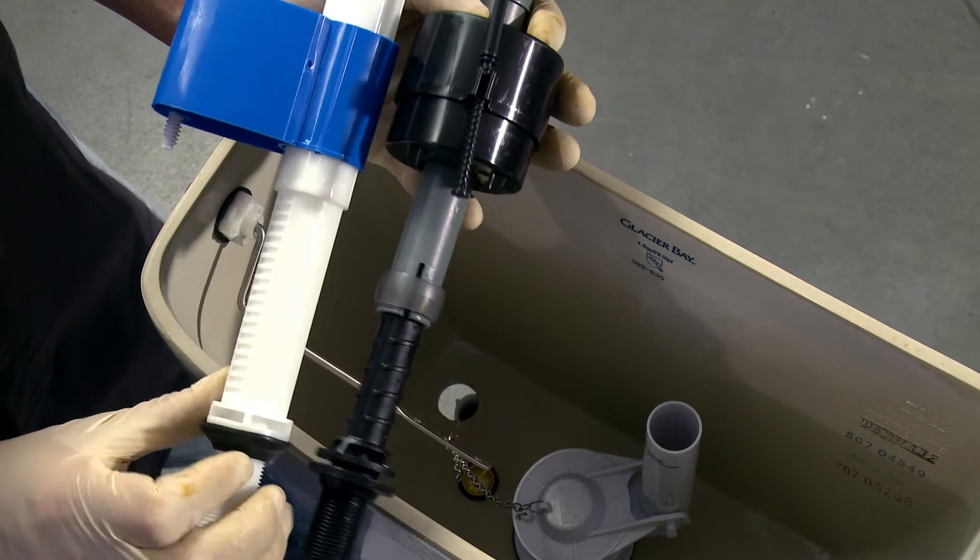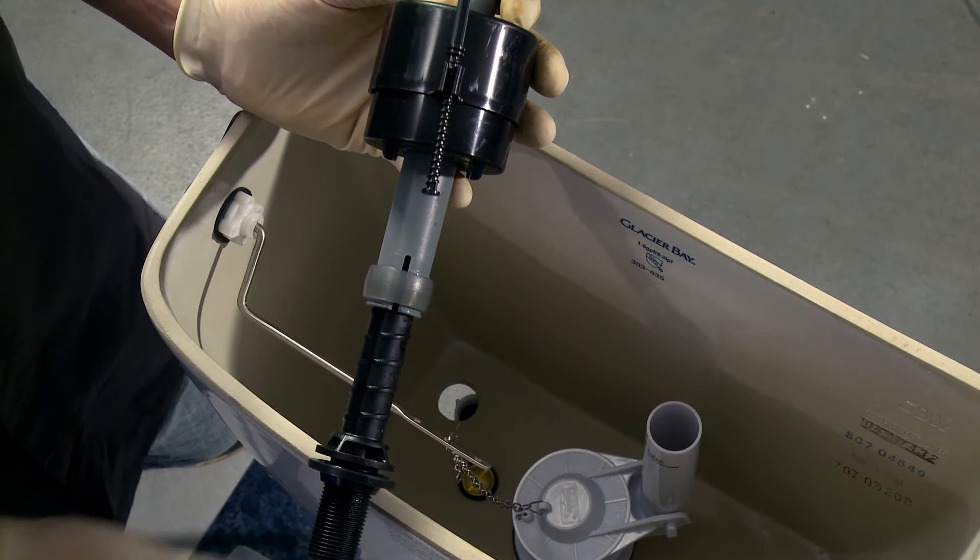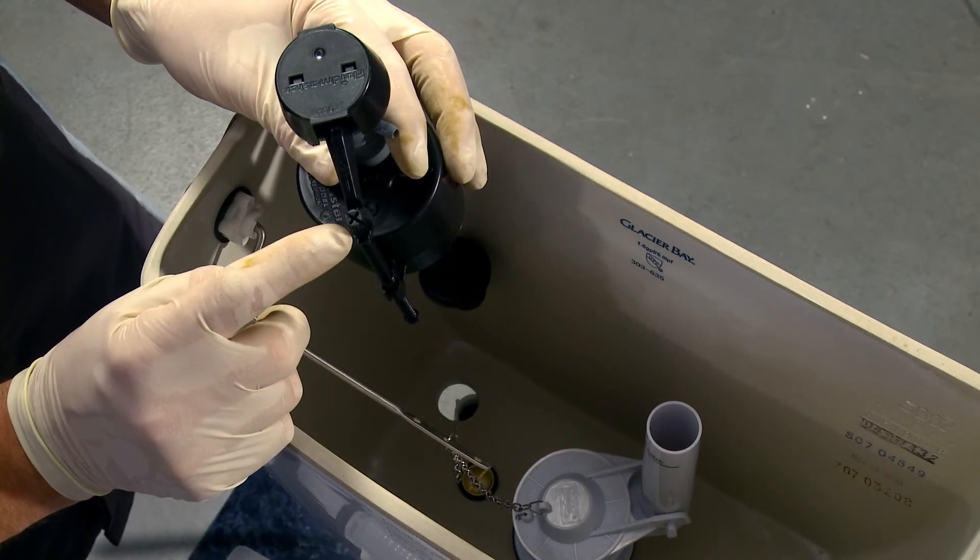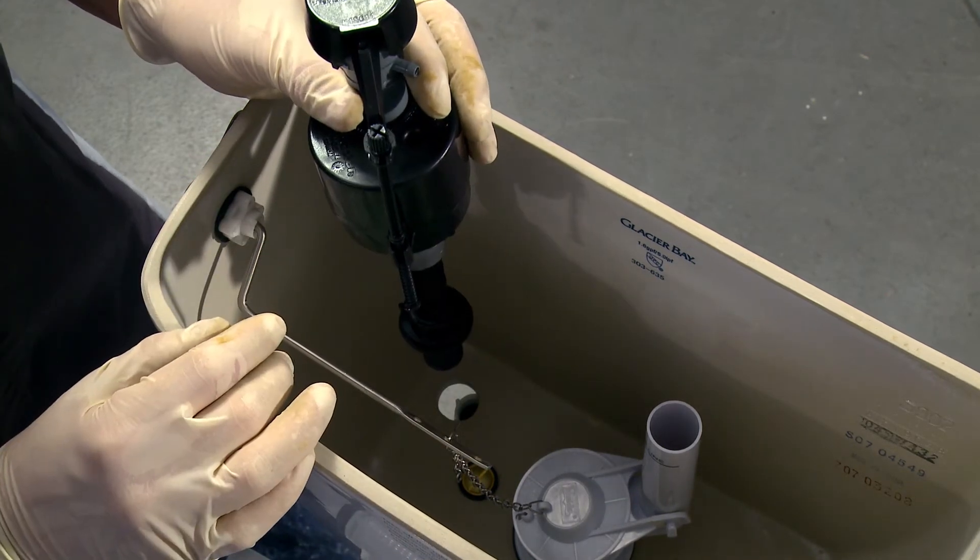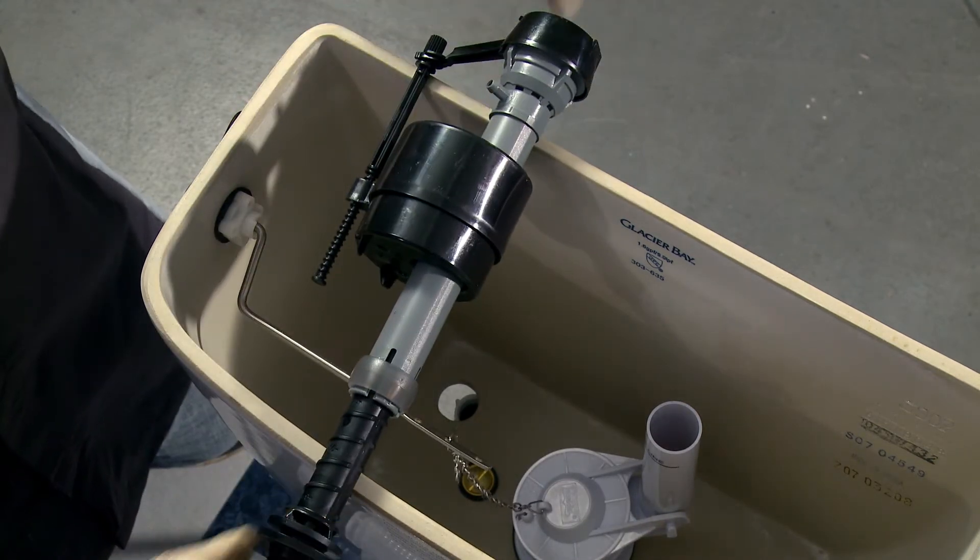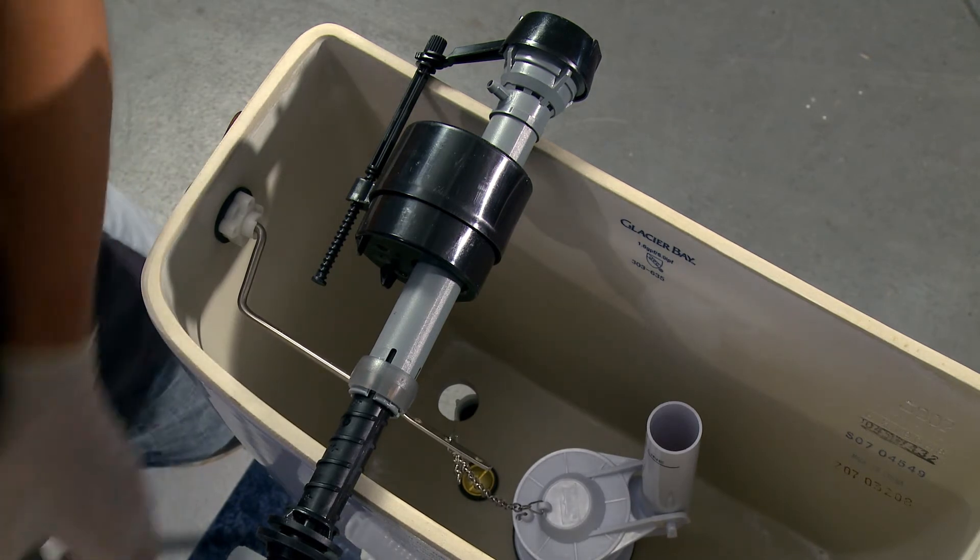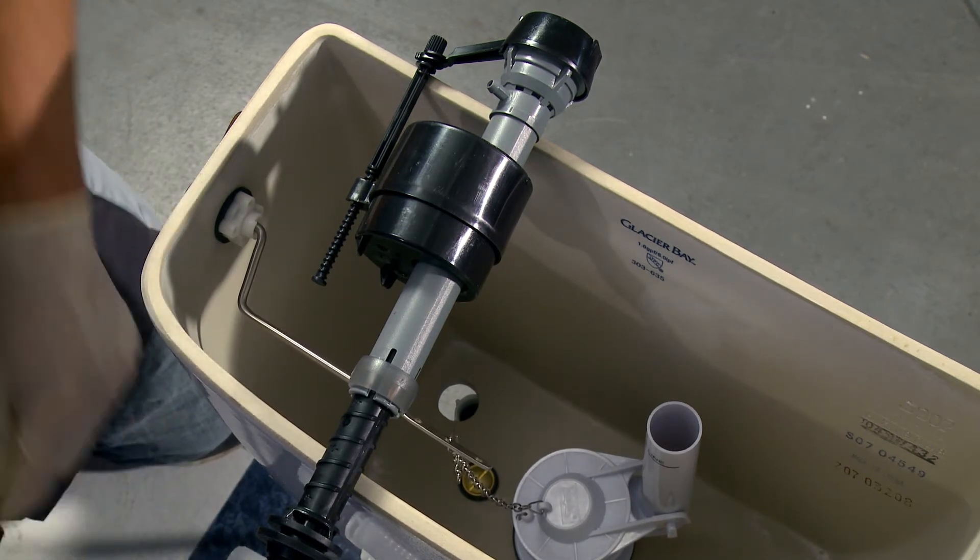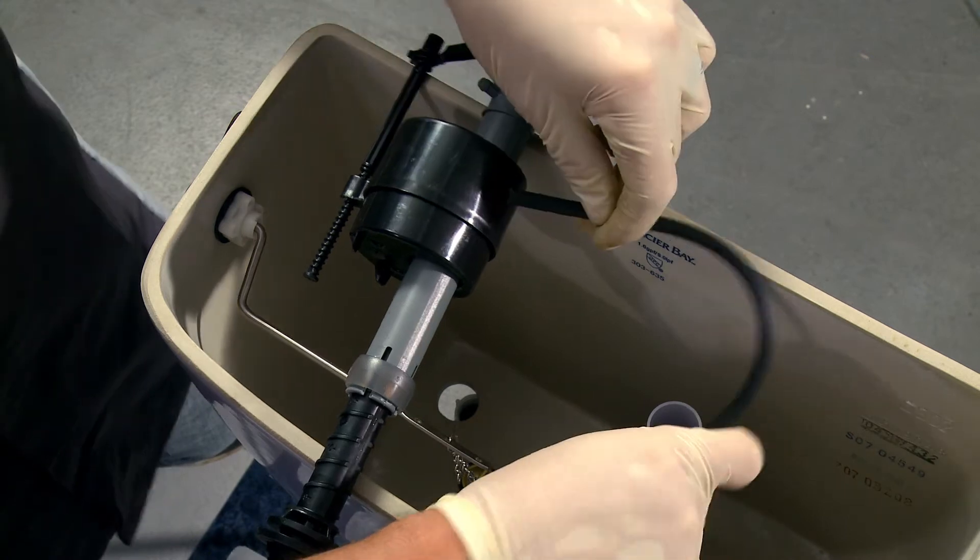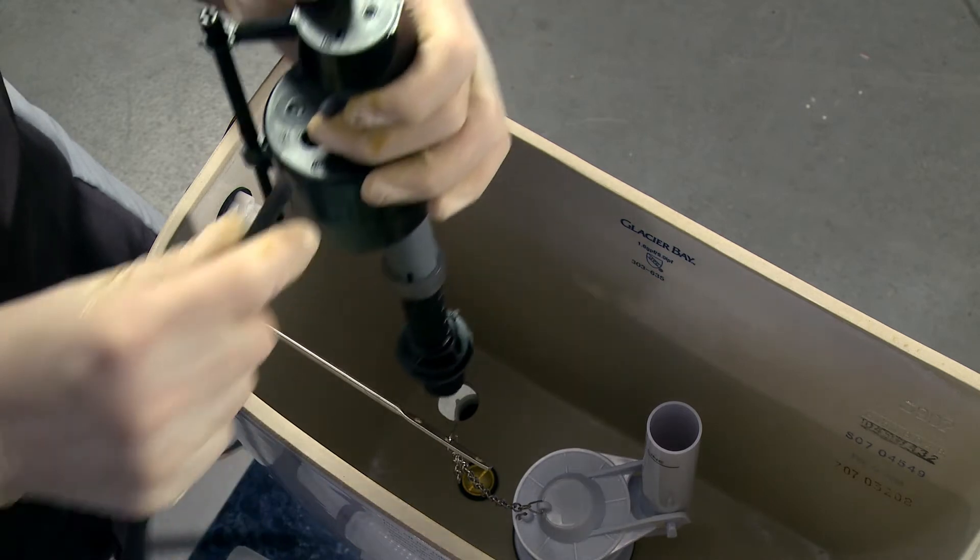Now, that's pretty darn good right there. We'll make some adjustments to the float adjustment here as we need to to get the water level where it needs to be. Now, the only thing left to go on is the tubing that goes over to fill the bowl.